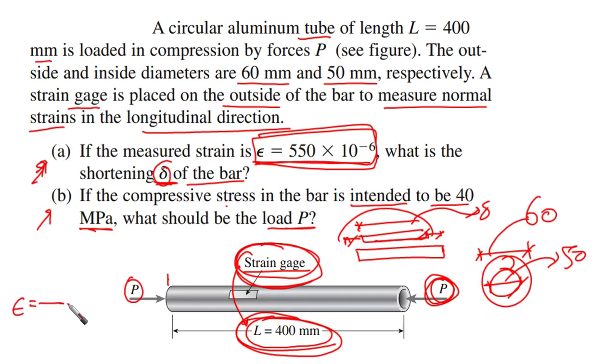A relation between the ε (the strain) and the shortening over L (the original length of the member). Then we can calculate the shortening based on knowing this ε and the original length. We have original length to be 400, ε is already measured to be with this number, then we can obtain this shortening.